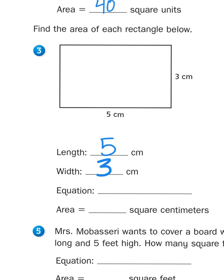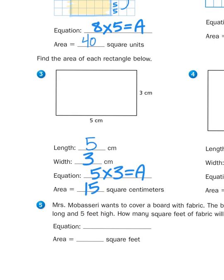So, the equation would be the length times the width, or 5 times 3 equals the area. And, as we all know, 5 times 3 is going to give us 15. So, the area of that rectangle would be 15 square centimeters, or 15 centimeters squared.